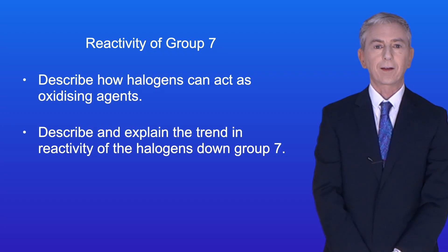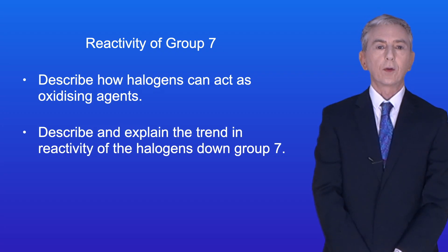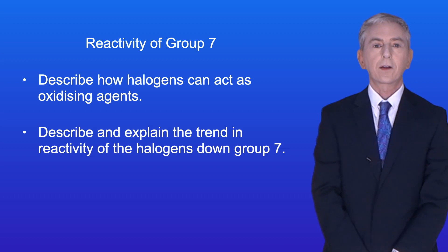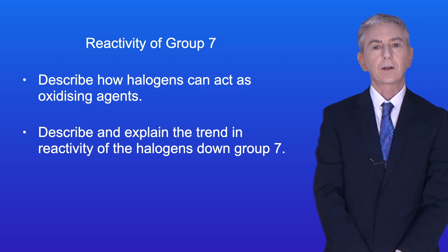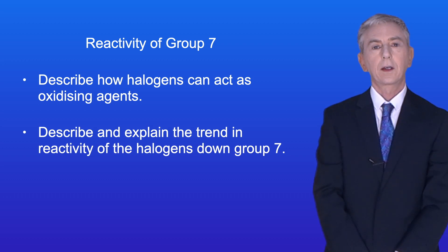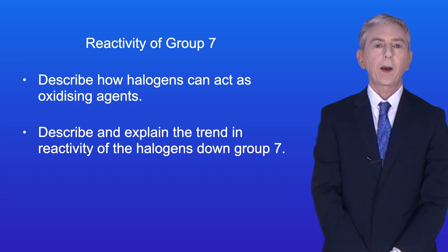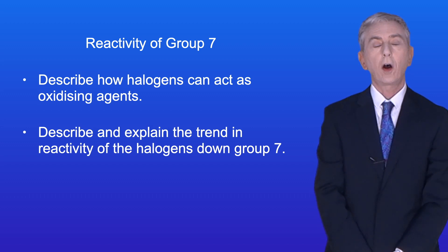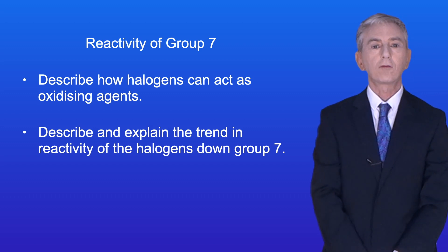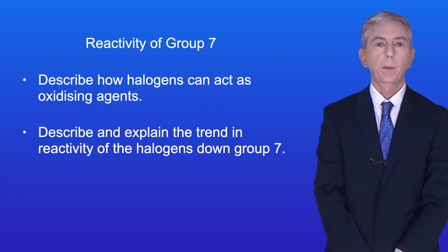Hi and welcome back to Free Science Lessons. By the end of this video you should be able to describe how halogens can act as oxidizing agents, and describe and explain the trend in reactivity of the halogens down Group 7.